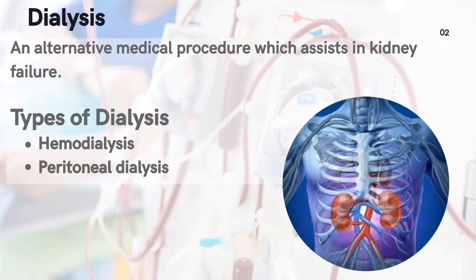Then why is dialysis needed? Dialysis is a procedure carried out in individuals having kidney failure — a condition in which the kidney's ability to remove toxins and excess fluid from the body fails. Therefore, dialysis is an alternative medical procedure that assists in kidney failure. There are two types of dialysis: hemodialysis and peritoneal dialysis.